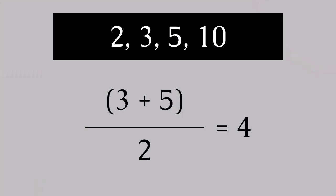The median is the middle number when you line everything out in order. Picture your data as a line of people standing shortest to tallest — the median is the person standing in the exact middle. If there's an odd number of data points, it's straightforward. But if there's an even number, the median is the average of the two middle numbers. Using our previous numbers — 2, 3, 5, and 10 — since there's an even number of data points, our median is 3 plus 5 divided by 2, or 8 divided by 2, which equals 4.